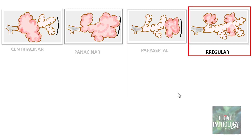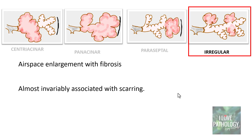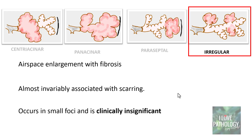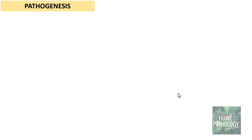Irregular emphysema, also referred to as airspace enlargement with fibrosis, is almost invariably associated with scarring of lung parenchyma, occurs in very small foci, and is clinically insignificant.